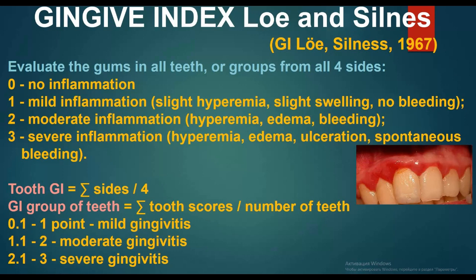Tooth gingival index calculation: sum of scores divided by 4 sides. Gingival index for group of teeth: sum of scores divided by number of teeth. Interpretation: 0.1 to 1 — mild gingivitis; 1.1 to 2 — moderate gingivitis; 2.1 to 3 — severe gingivitis.